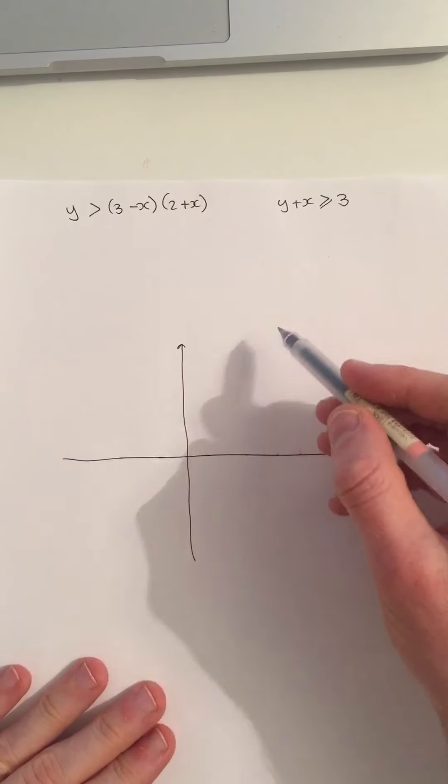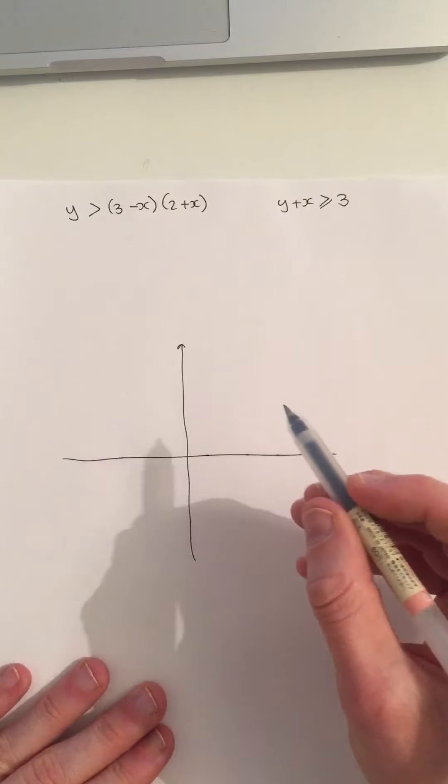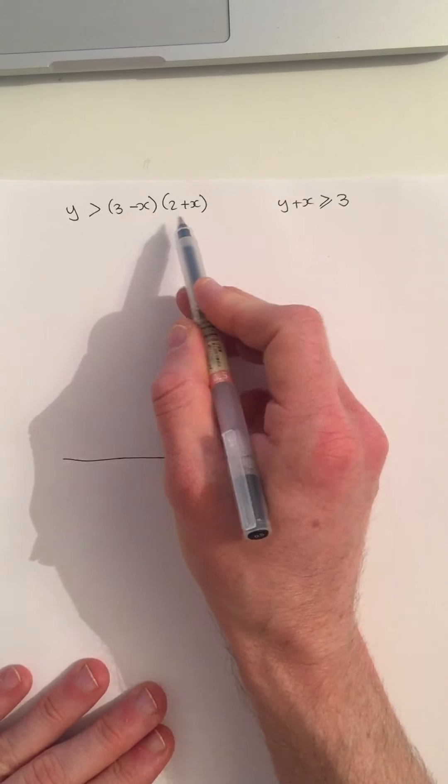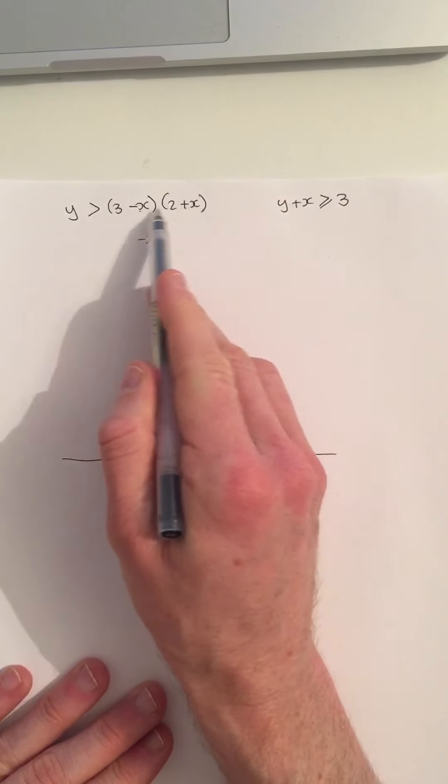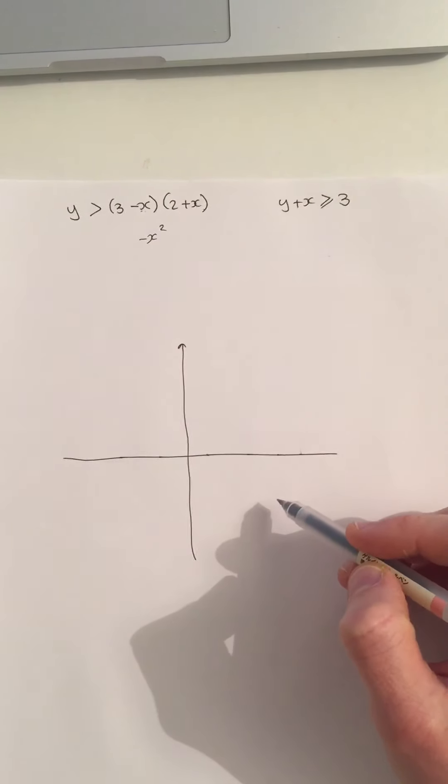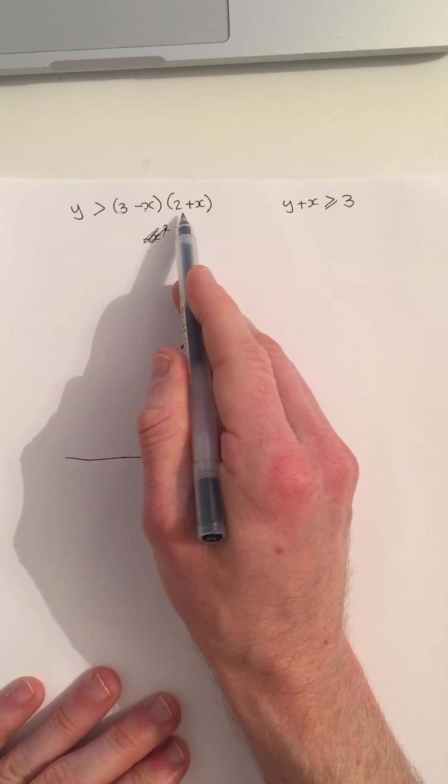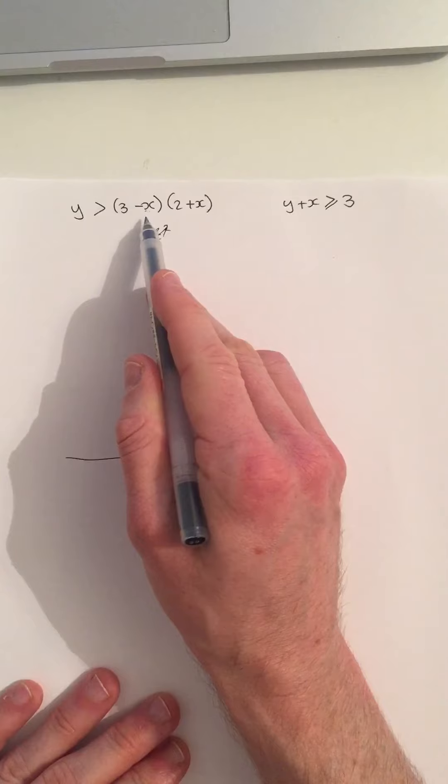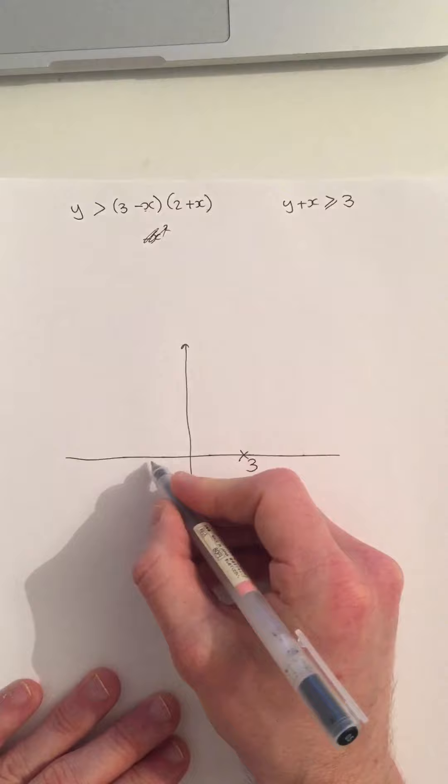So I know it is either a u shape or an n shape. In this fact, I know it would be an n shape because if I did expand this, I would end up with a minus x squared when I expand this out. So I know it's an n shape and not a u shape. I'm not actually going to expand out because this is the best form to have it in because I can read off the y and the x intercepts easily to be 3 and minus 2.